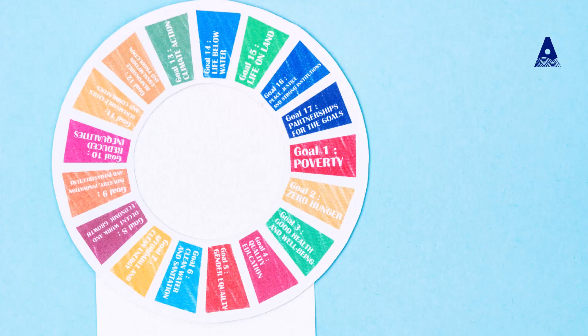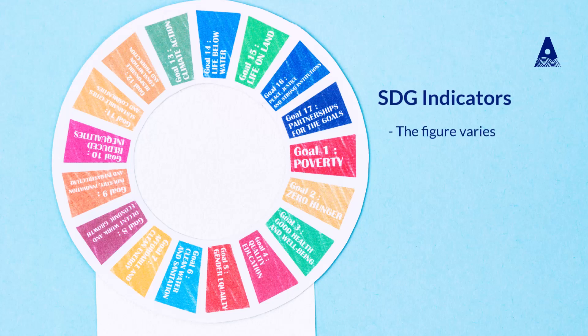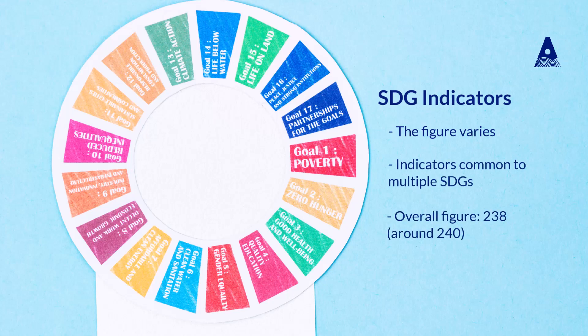Interestingly, just if you are ever looking at the number of indicators in the SDGs, you will find that the figure varies — 240, 242, 238. There are different numbers recorded, but that's because in some cases there are indicators that are actually common to a number of the SDGs. The actual overall figure is 238, but it bounces around the 240 mark.